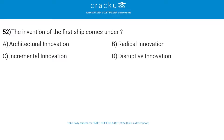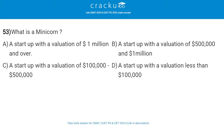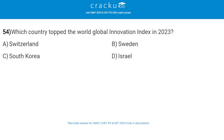The invention of the first ship comes under Radical Innovation. What is a Minicon? A Minicon is a startup with a valuation of 1 million and over. Which country topped the world's global innovation index in 2023? The answer is Switzerland.